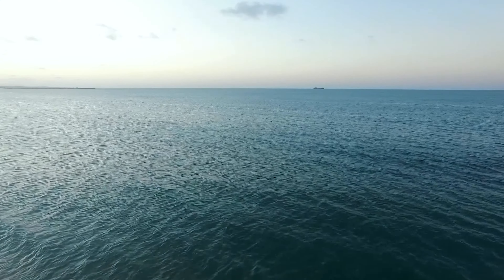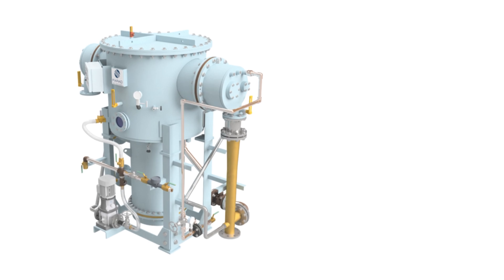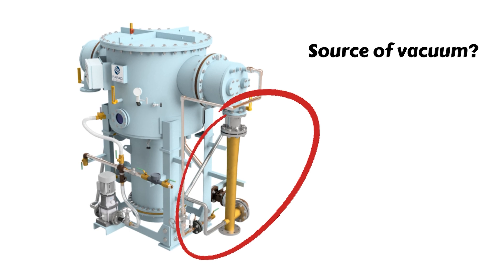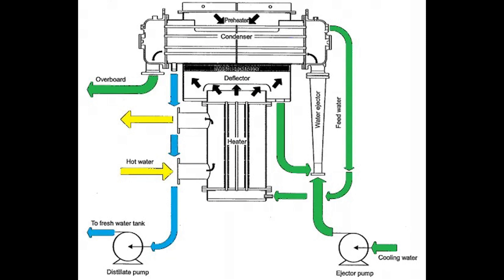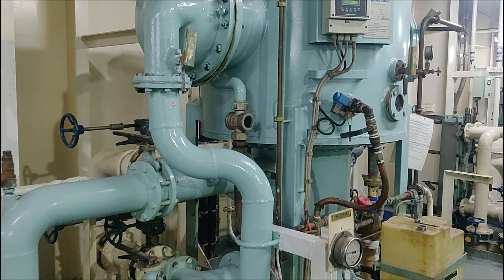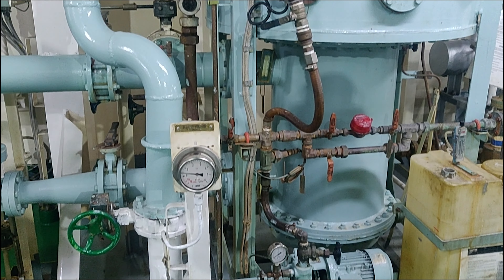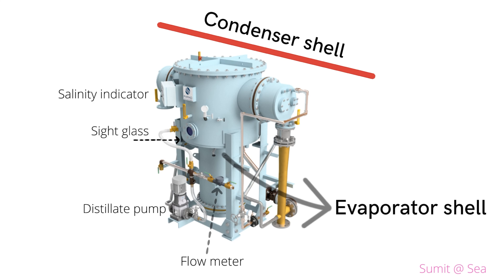For producing fresh water at sea, we need: number one, seawater; number two, a heat source; and number three, a source of vacuum. Seawater is easily available at sea. The heat source for the fresh water generator is the waste heat rejected by the main engine jacket cooling water. The combined air-brine ejector creates vacuum in the evaporator shell by continuously driving out seawater. Using energy from the heating coil and by reducing pressure inside the evaporator shell, boiling can take place at around 40 to 60 degrees Celsius.